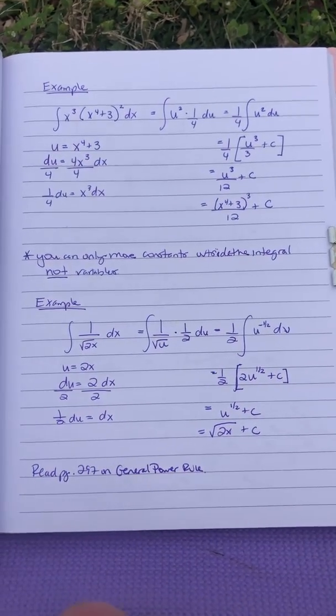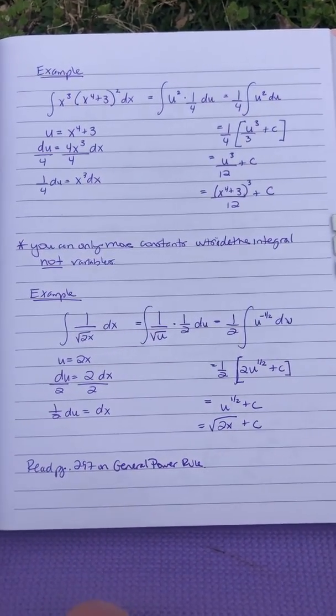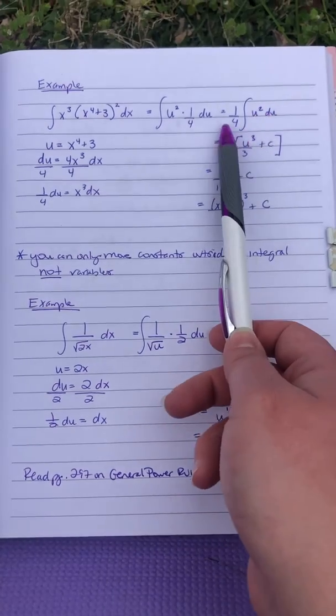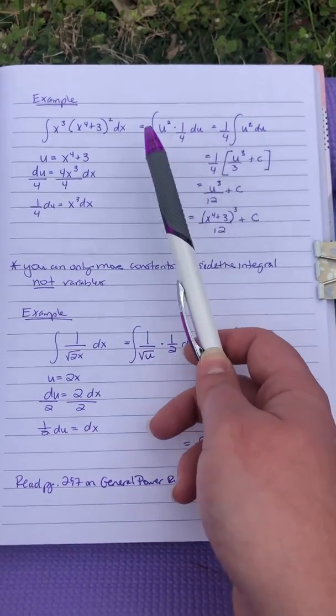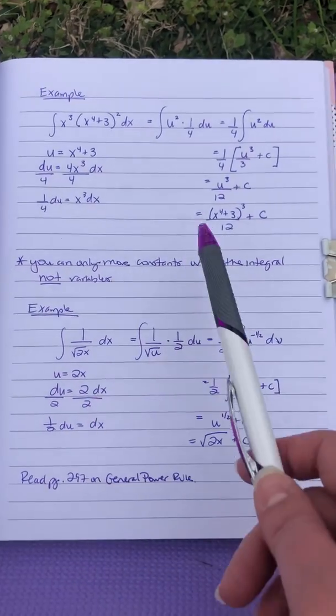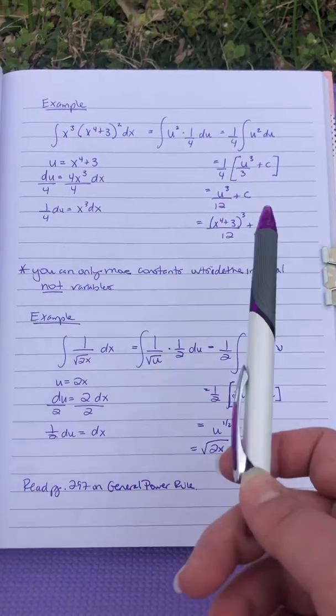You can only move constants outside of the integral, not variables. So the only thing that gets moved outside to simplify things is numbers. And it has to be things being multiplied. You can't just decide to move the plus three outside or something.